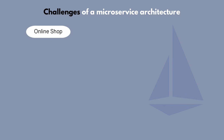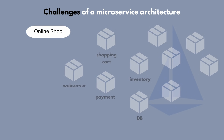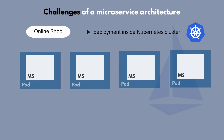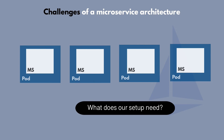Let's say we have an online shop application which is made up of several microservices. We have the web server that gets the UI requests, a payment microservice that handles the payment logic, a shopping cart, product inventory, database, and probably some more services. We're deploying our microservice application inside a Kubernetes cluster. So what does our microservice application need to run successfully, or what are some of the required configurations for such an application?